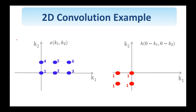So again, the first step is to rename the axis, so now we have x of k1, k2, and I do the same for h, but I reflect it with respect to the vertical and horizontal axis, so the reflected version is shown here. I put a 0 here to indicate that the shift, if I just reflect, is 0, so this is n1 and this is n2.